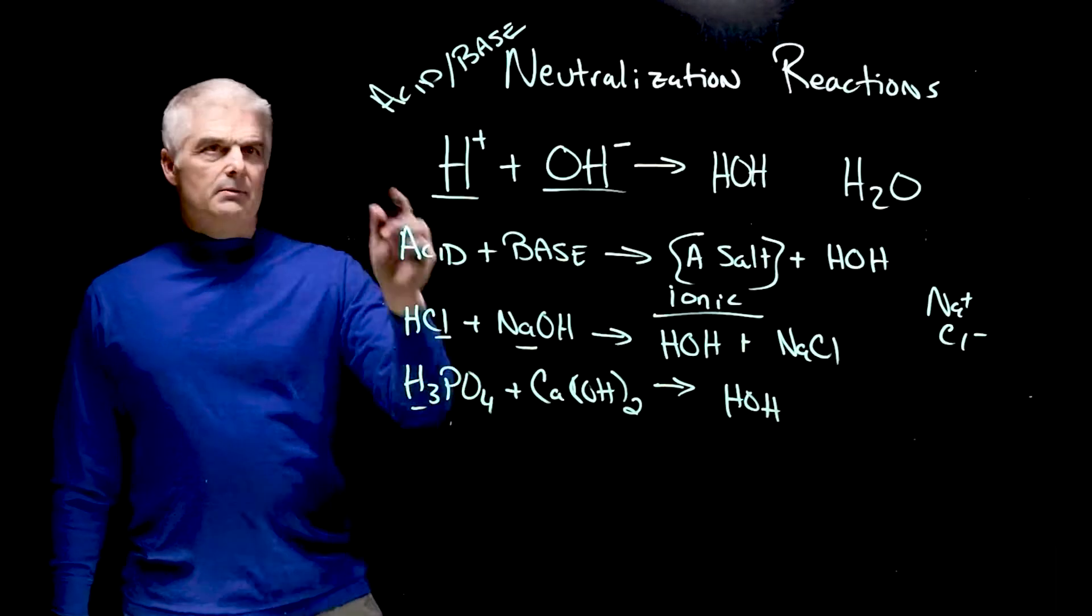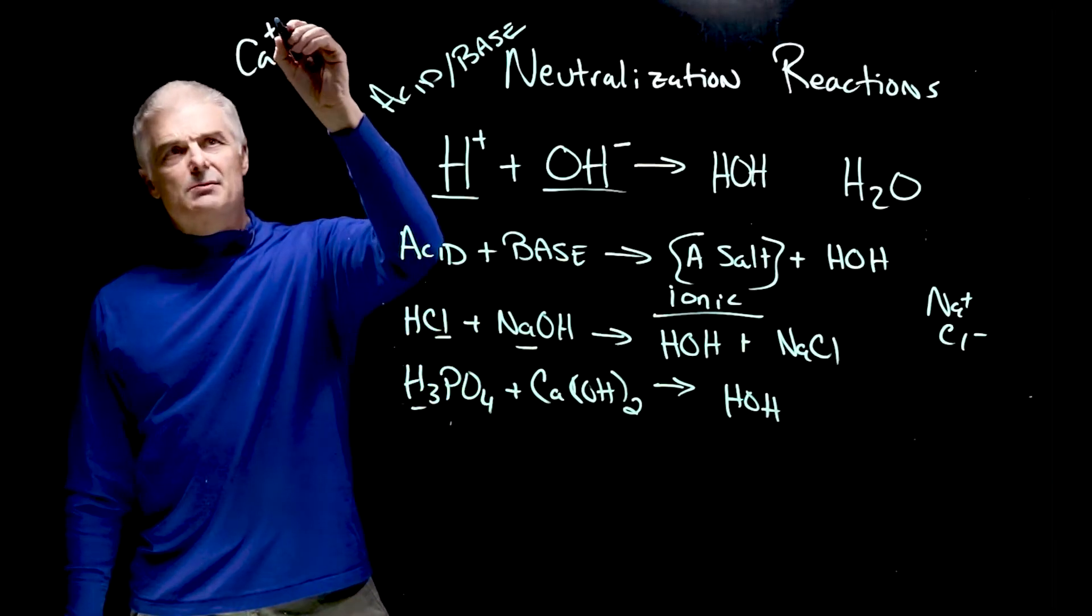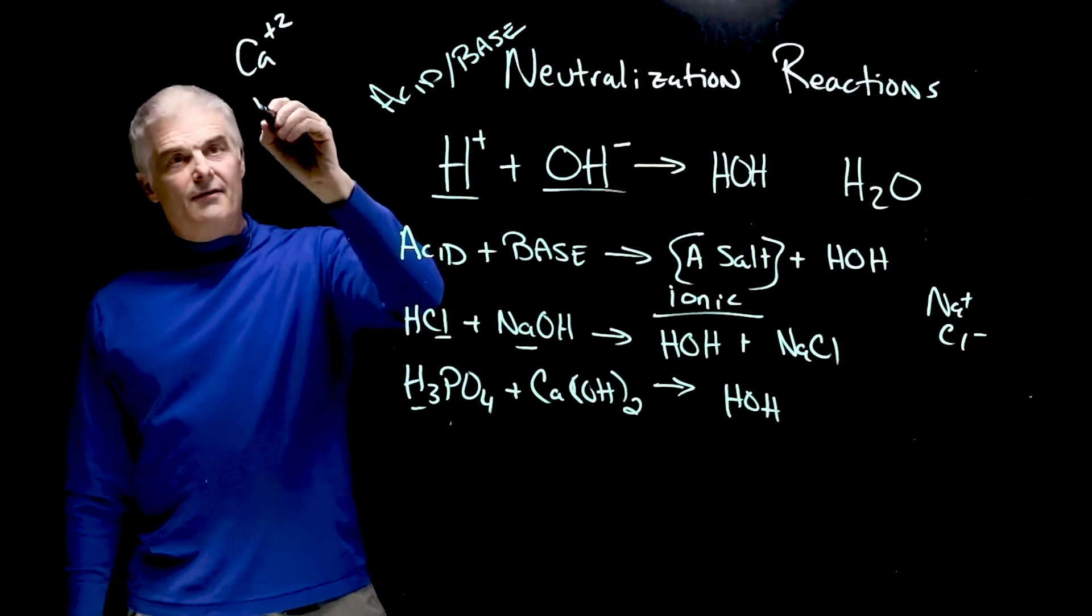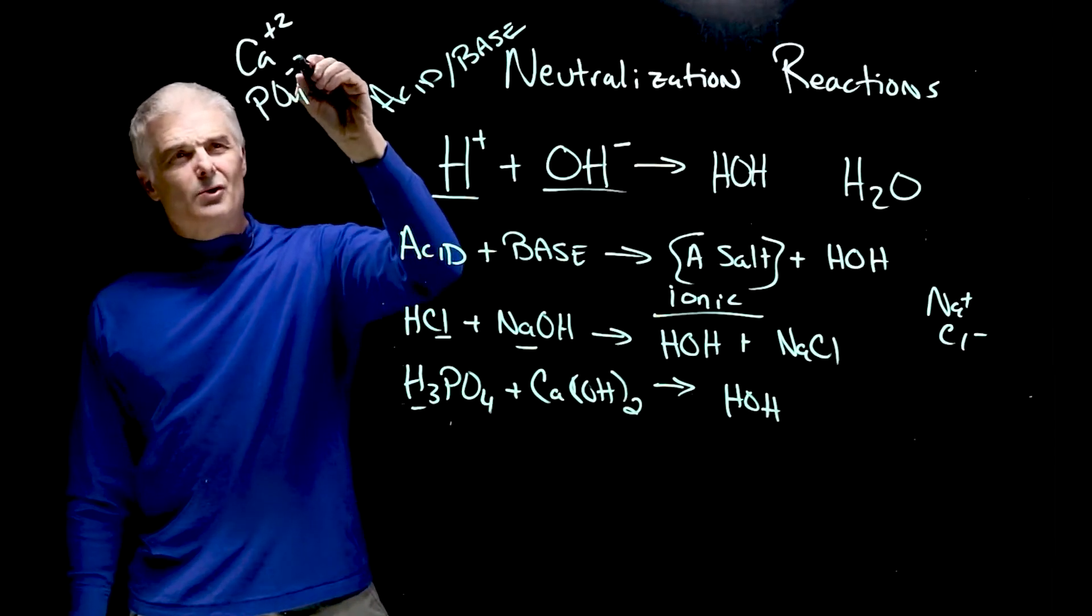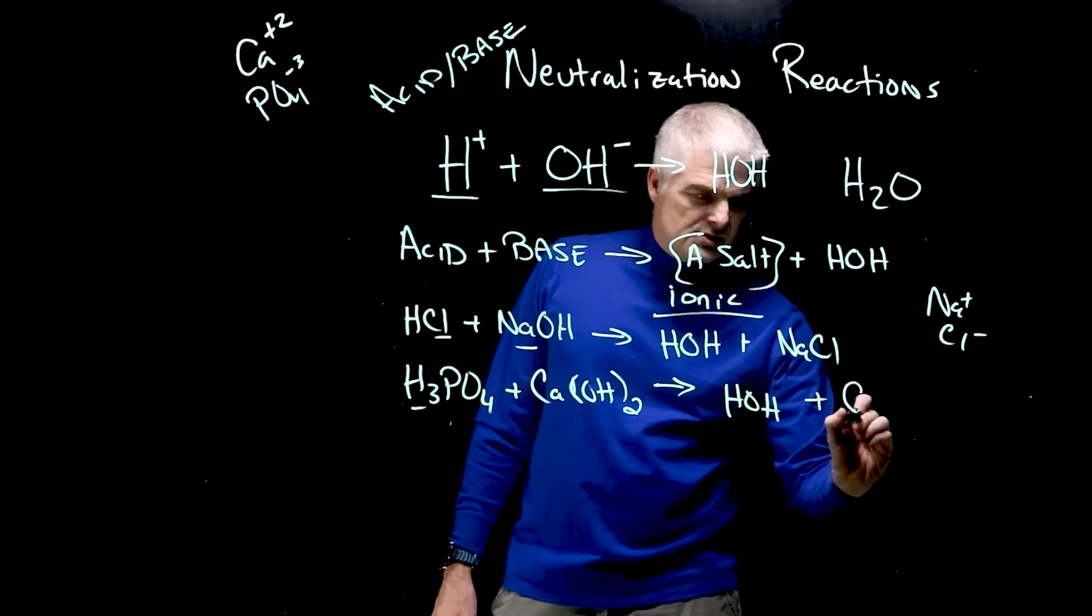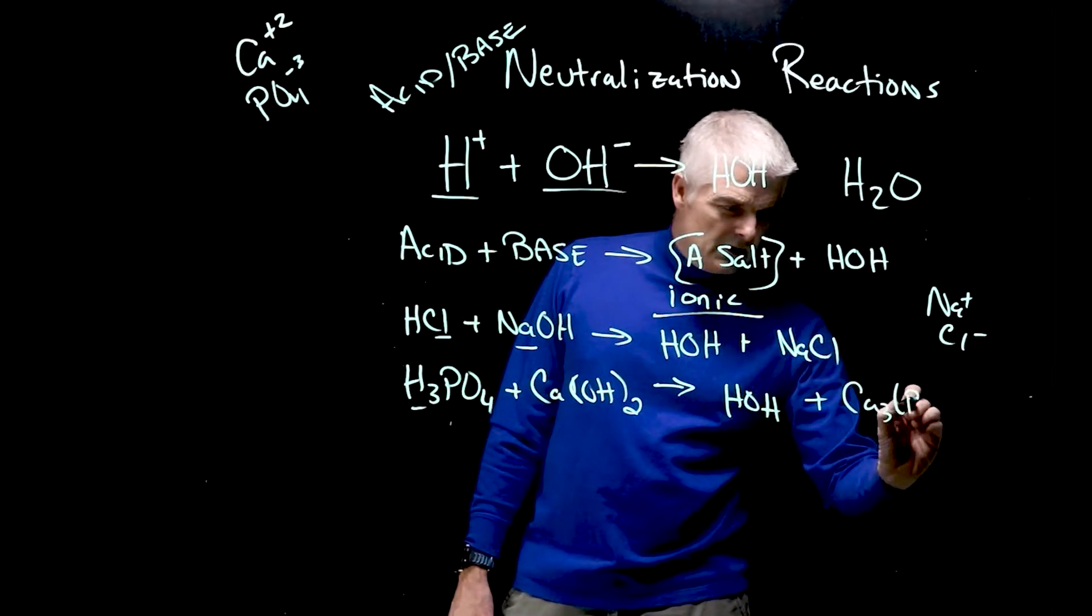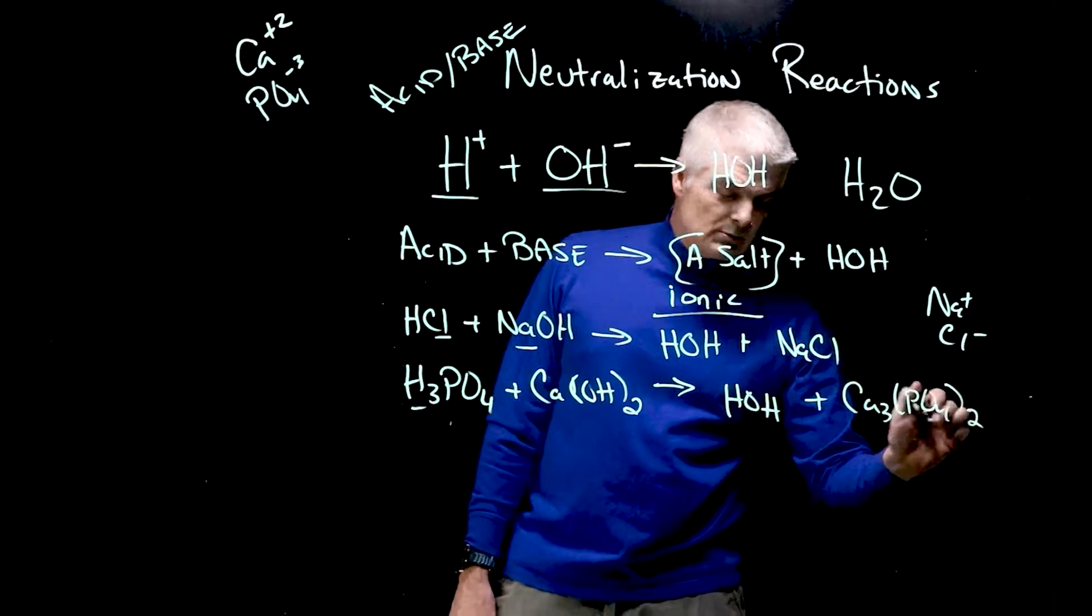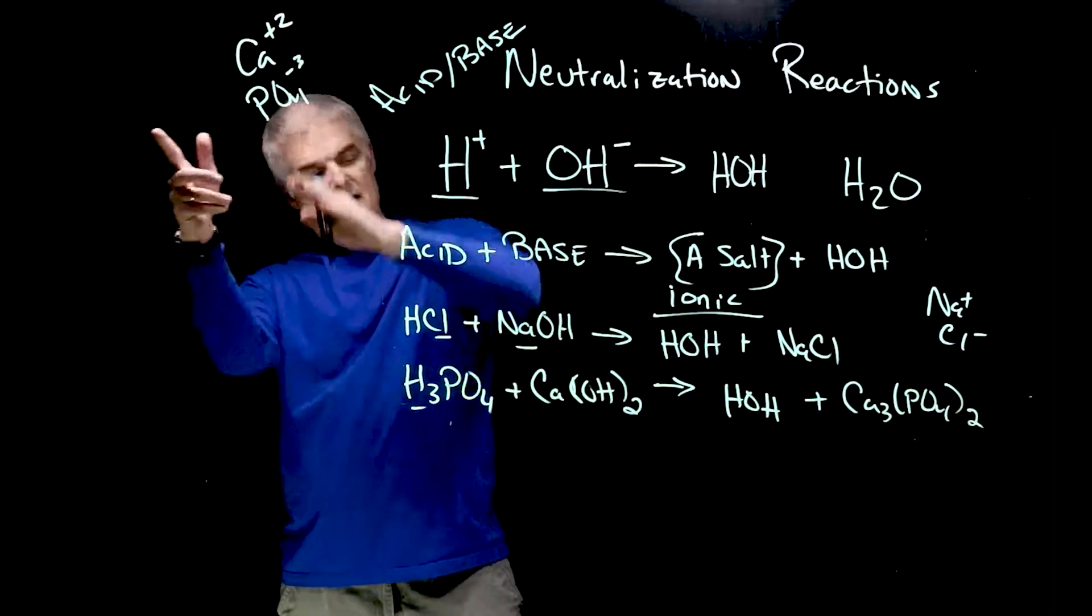I have to play sort of a charge game. So calcium, periodic table, has a plus two charge. Phosphate, probably got a table somewhere of the polyions, PO4 negative three. That's going to make Ca3(PO4)2, because you have to put them together so that the charges add up to zero.